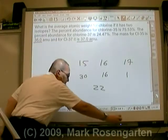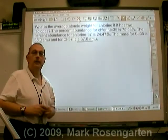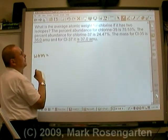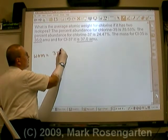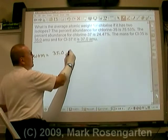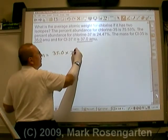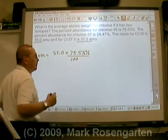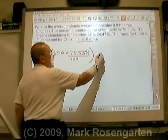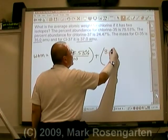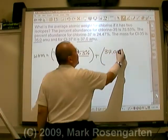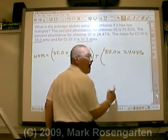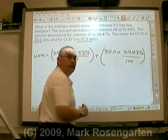So how do we calculate the weighted average mass? Weighted average mass is equal to the mass of the first isotope, which is 35.0, times its percent abundance, 75.53, divided by 100. We're going to take that and add to it the mass of the other isotope, 37.0, times its percent in nature, 24.47%, also divided by 100.